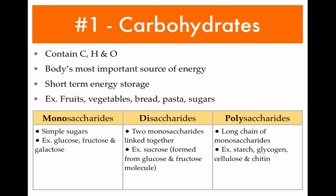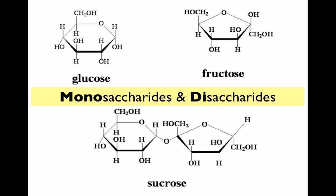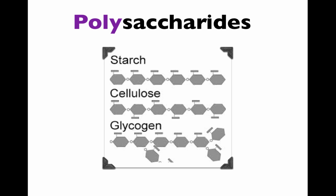Some people pronounce it chitin but I pronounce it chitin. What you see in these diagrams are examples of monosaccharides and disaccharides — a glucose molecule and a fructose molecule, which are both monosaccharides, combine to form the disaccharide sucrose. Polysaccharides are multiple monomers chained together. Examples are starch, cellulose and glycogen — these are ones you'll need to know for your test and exam.